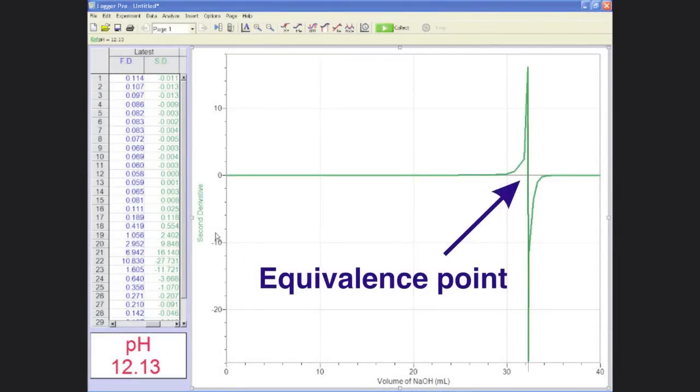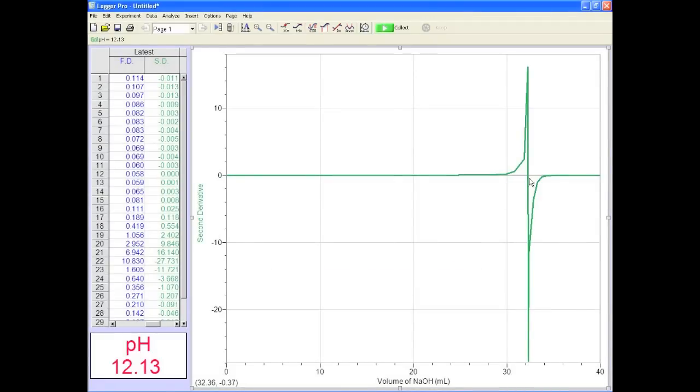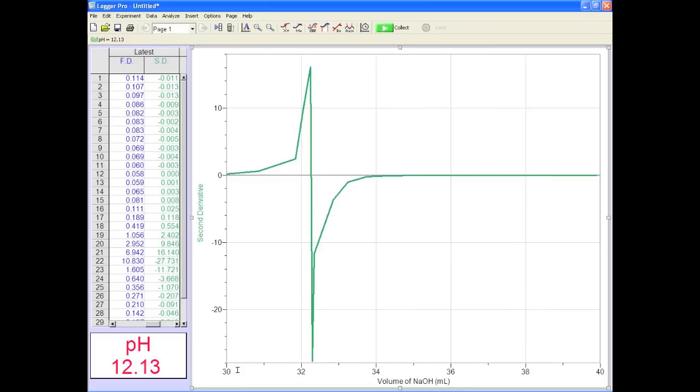The equivalence point volume is where the line crosses the x axis. Zoom up for a better view by changing the scale on the x axis. Record the equivalence point volume, print your graphs and you're done.